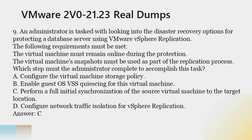Question 9. An administrator is tasked with looking into the disaster recovery options for protecting a database server using VMware vSphere replication. The following requirements must be met: the virtual machine must remain online during the protection, and the virtual machine's snapshots must be used as part of the replication process. Which step must the administrator complete? A. Configure the virtual machine storage policy. B. Enable guest OS VSS quiescing for this virtual machine. C. Perform a full initial synchronization of the source virtual machine to the target location. D. Configure network traffic isolation for vSphere replication. Answer: C.